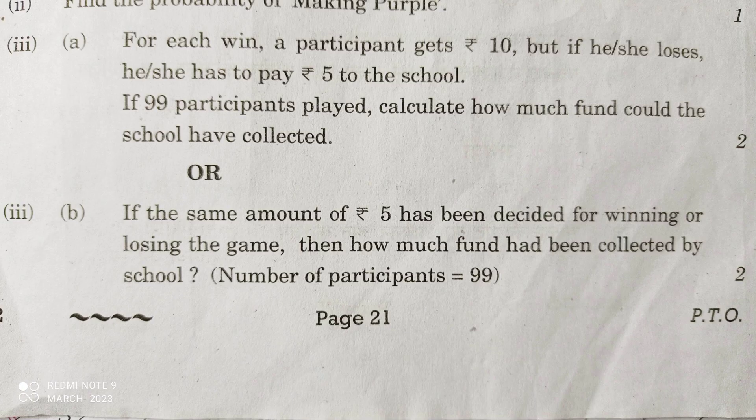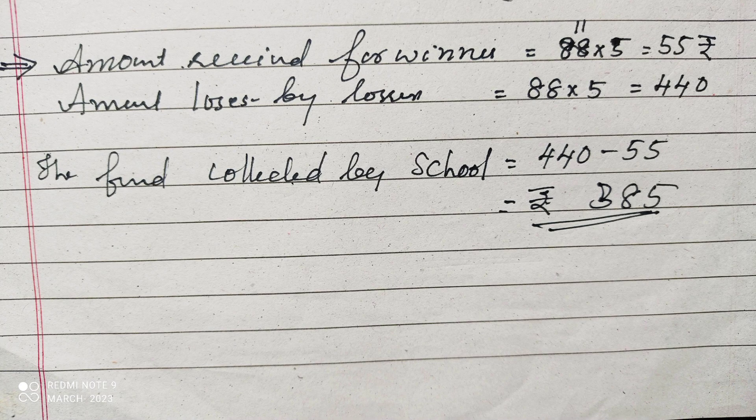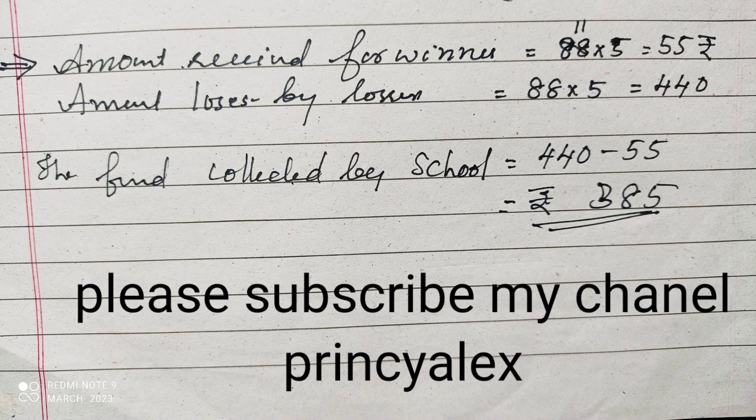The last part: if the amount of rupees 5 has to be decided for both winning and losing the game, then how much fund had been collected by the school? Number of participants is 99. Here, for winning or losing, the amount is 5 rupees. Therefore, the amount received from winners is 11 × 5 = 55. The number of participants losing is 88, so the amount from losers is 88 × 5 = 440. The school is getting 440 and has to pay 55 rupees. Therefore, the fund collected by the school is 440 minus 55 = rupees 385.